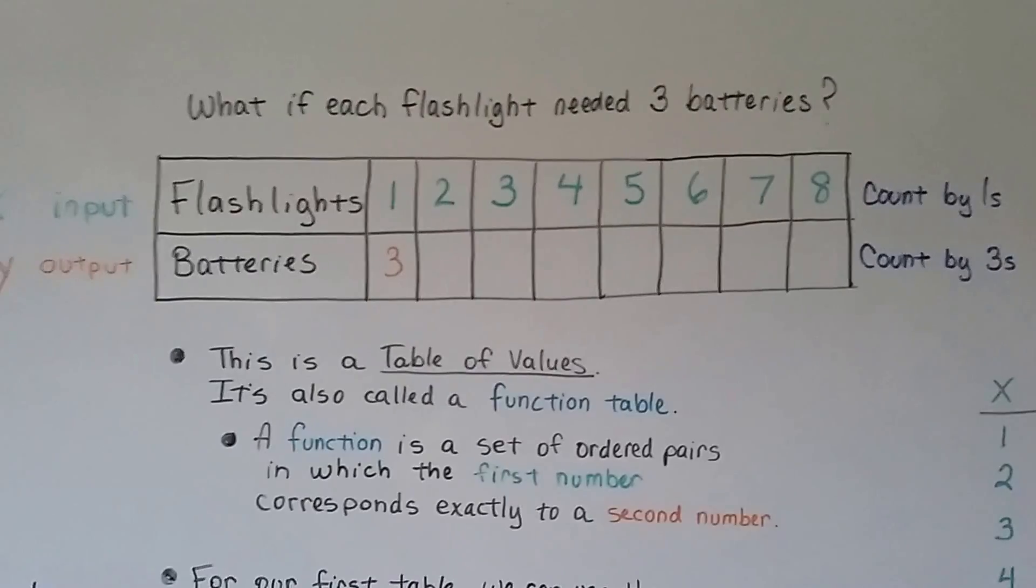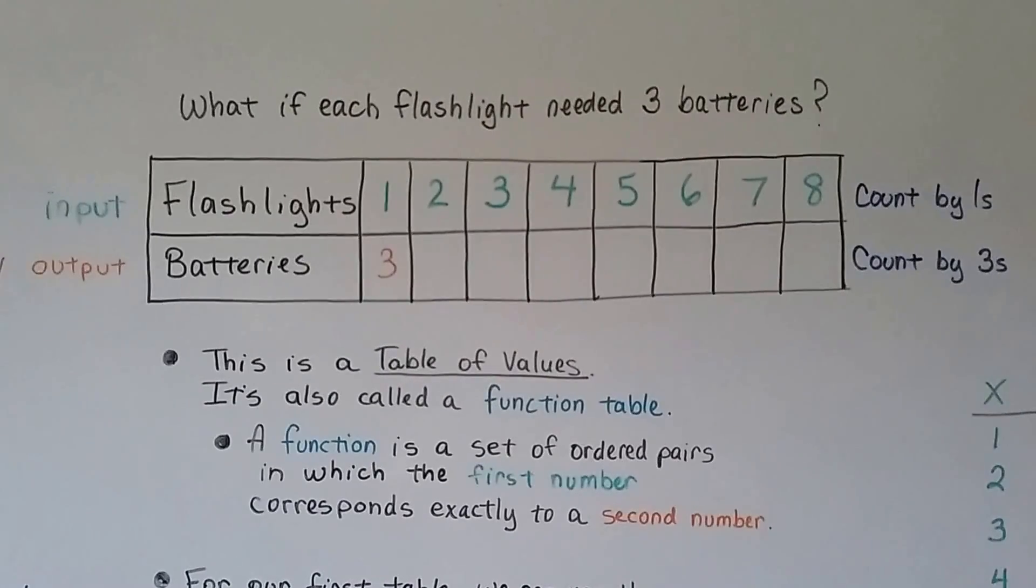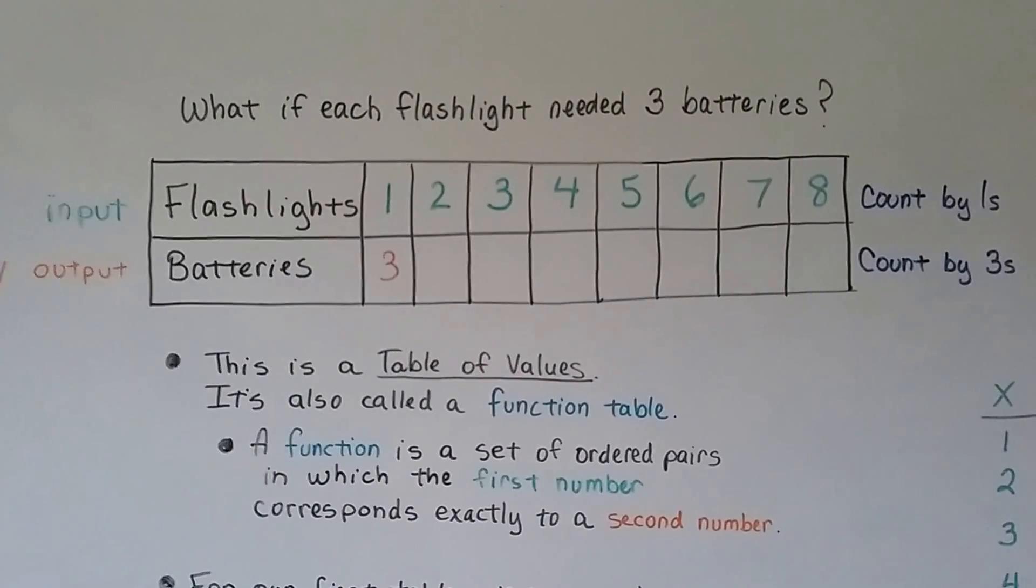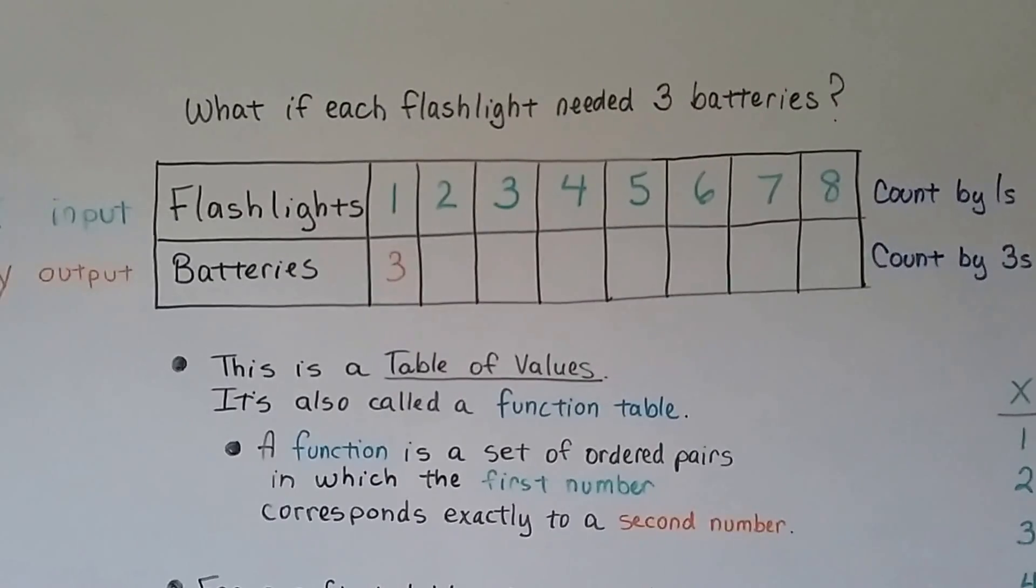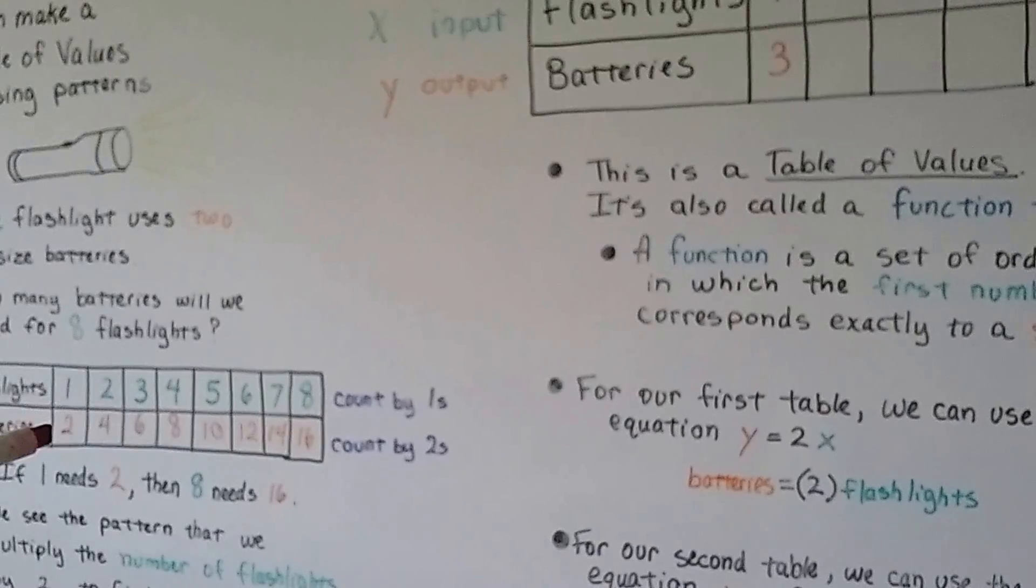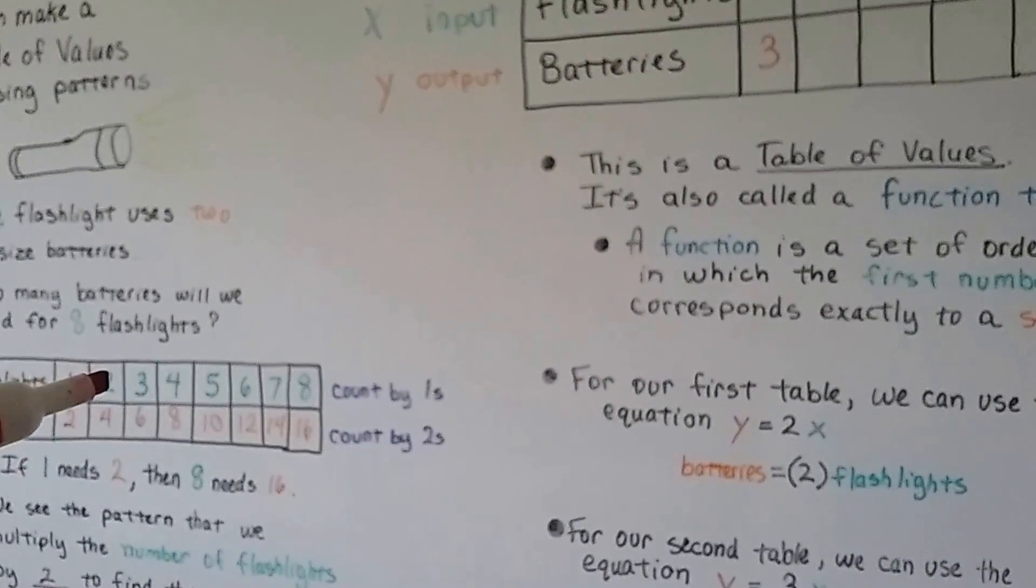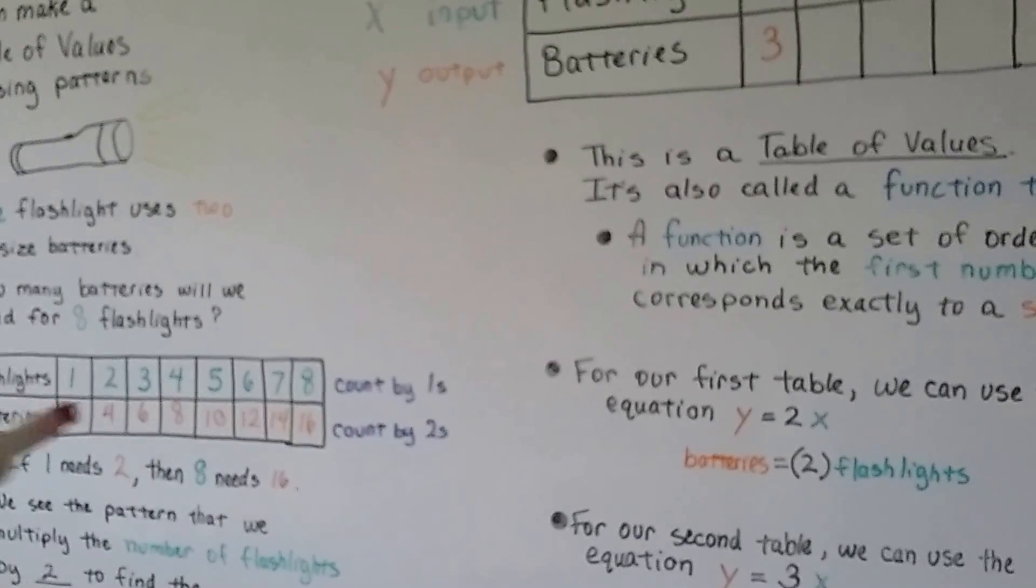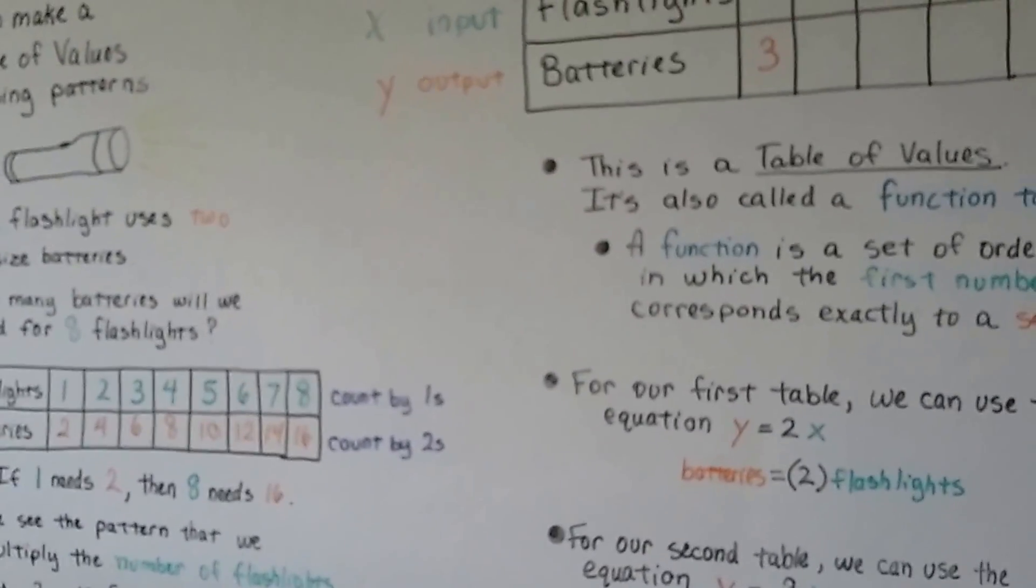This is a table of values and it's also called a function table. A function is a set of ordered pairs in which the first number corresponds exactly to the second number. So, just like in this one, this first number corresponds to the second number, two to the four, three to the six. The rule here is multiply by two, isn't it?